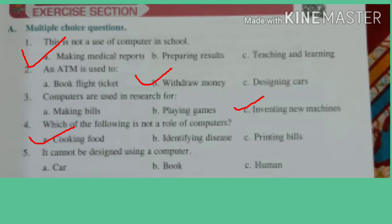Number 5: It cannot be designed using a computer. The options are car, book, and human. This is also very very easy. We all know that computer can do many things but it can never ever design a human being. So the answer is option C, human.